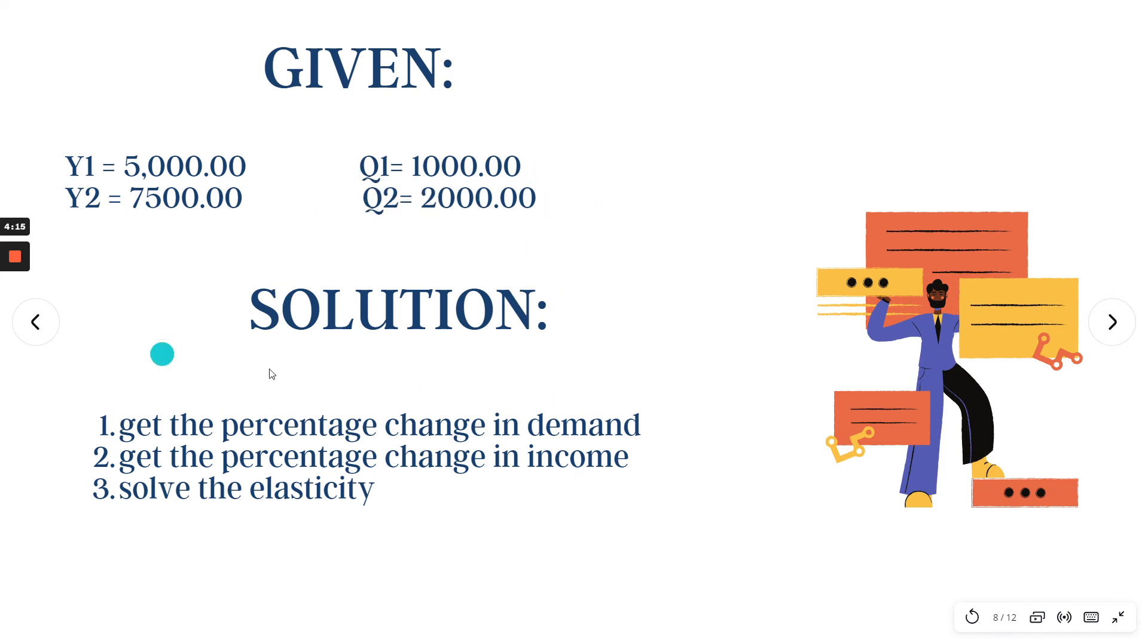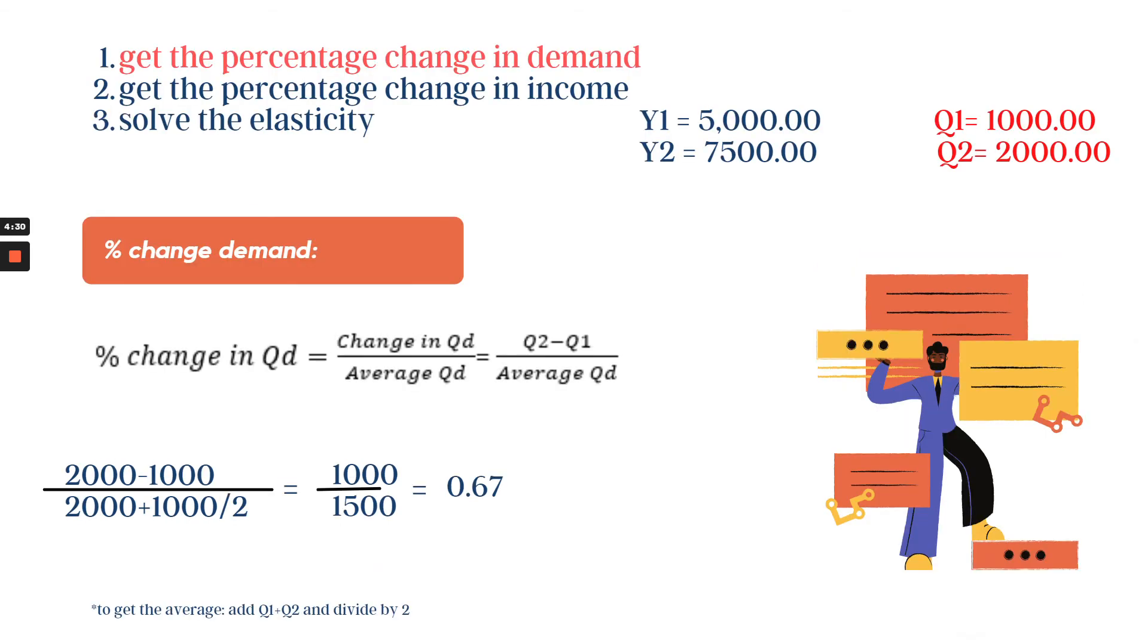How do we know if it's luxury, necessity, or normal? We have to get the percentage change in demand, then get the percentage change in income, and then solve the elasticity. First step, get the percentage change in demand. That is Q2 minus Q1 over the average of quantity demanded. So that's 2,000 minus 1,000 over 2,000 plus 1,000 divided by 2, which is equivalent to 1,000 over 1,500, and the answer is 0.67.